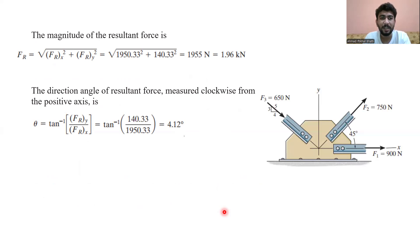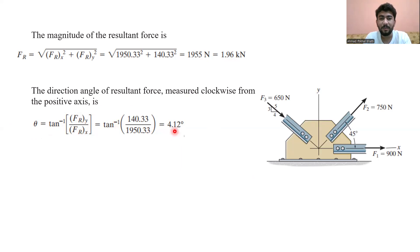To find the resultant of all these forces, we take the magnitude of the resultant horizontal and vertical forces, giving us 1.96 kilonewtons, or 1950.33 newtons. For the direction angle of the resultant force, we use the inverse tangent of the resultant vertical force over the resultant horizontal force, which gives us 4.12 degrees.